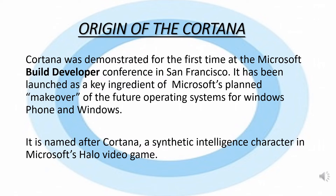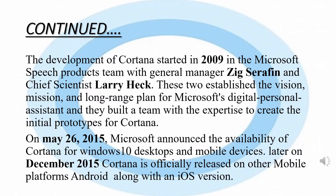As we know, Cortana is named after a synthetic intelligence character in Microsoft's Halo video game. The development of Cortana started in 2009 in the Microsoft Speech Product team, with General Manager Zack Seraphine and Chief Scientist Lariat. These two established the vision, mission, and long-range plan for Microsoft's digital personal assistant, and they built a team with expertise to create the initial code prototypes for Cortana.